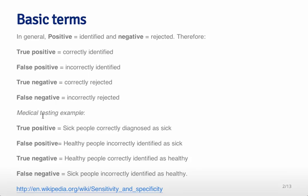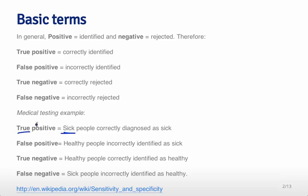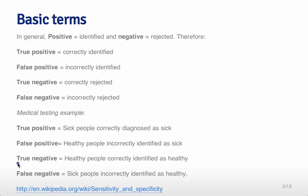To make this more concrete, consider a medical testing example. We're trying to identify people that are sick using a screening test — a very common example would be mammograms to identify if women have breast cancer. The 'true' part refers to whether you're sick or not. A true positive is somebody who is truly sick and we correctly diagnosed them as being sick. A false positive means you are actually a healthy person but we still identified you as sick. A true negative is somebody who is truly healthy and we identified them as healthy. A false negative is somebody who is sick but we incorrectly identified them as healthy.